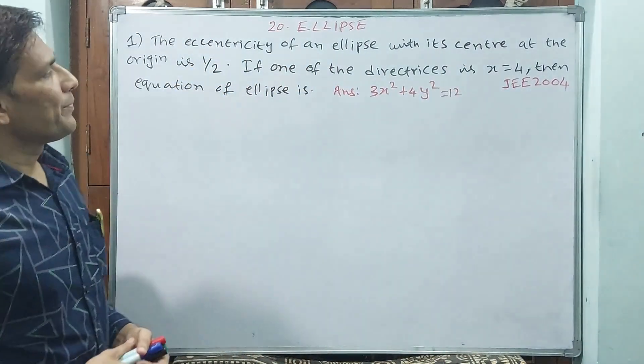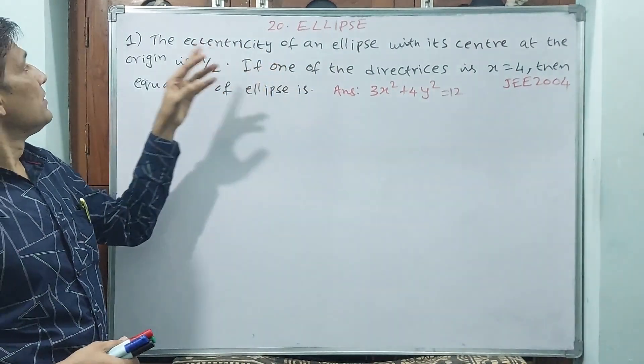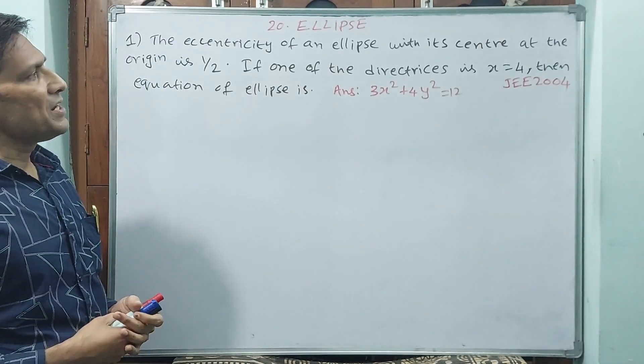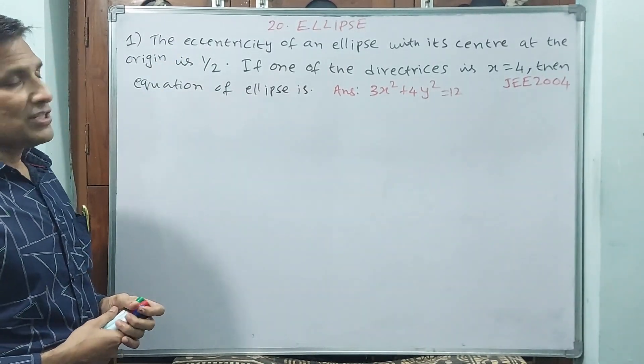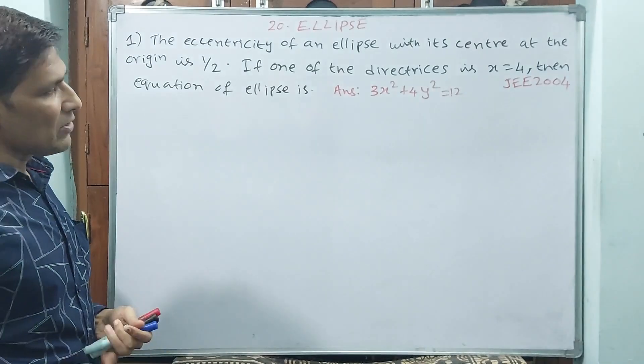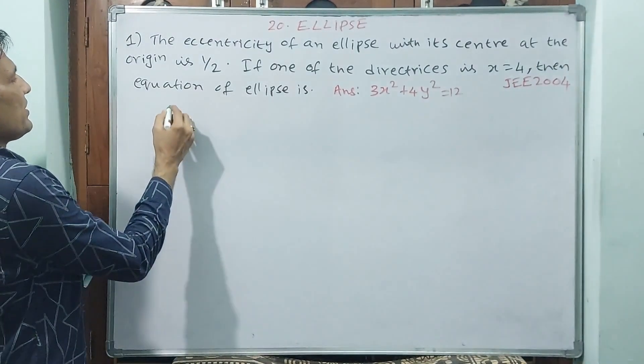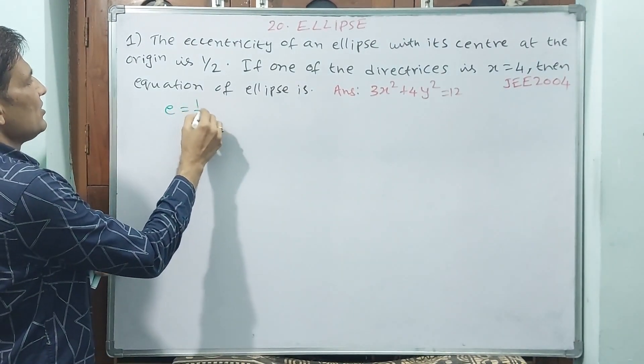After in 2004 ellipse, the eccentricity of an ellipse with its center at the origin is one by two. So let it at one go steps, that means he has given e, eccentricity is equal to 1/2.